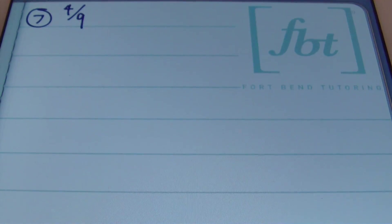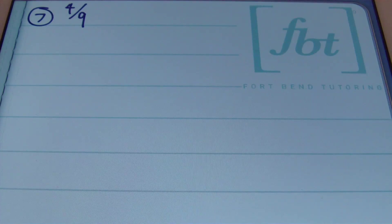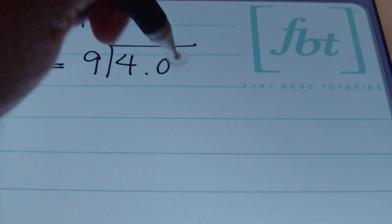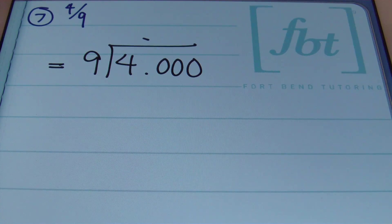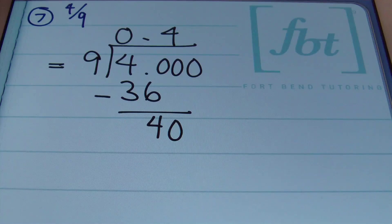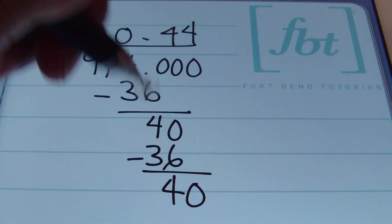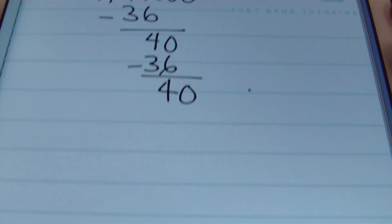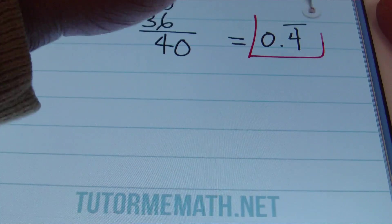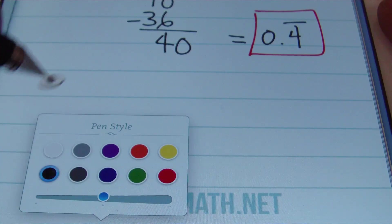Problem 7 is four ninths. Nine can't become a power of ten, so we use long division. Nine goes into 4 zero times; nine goes into 40 four times (4 × 9 = 36). Subtracting and bringing down, nine goes into 40 four times again — the fours keep repeating. The answer is 0.4̄ — four tenths repeating.